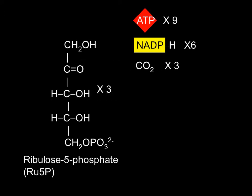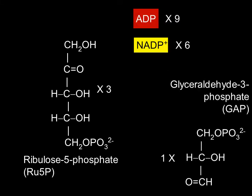The energy from the light reactions in the form of ATP and NADPH, in conjunction with ribulose-5-phosphate, are utilized to convert CO2 into a more useful carbon compound, specifically glyceraldehyde-3-phosphate, or GAP. Additionally, the Calvin cycle will regenerate the ribulose-5-phosphate that was used, and the ADP and NADP-plus will need to be regenerated during the light reactions.